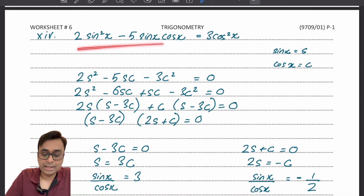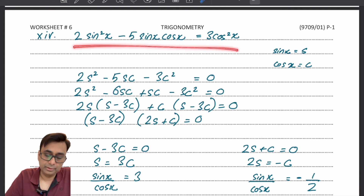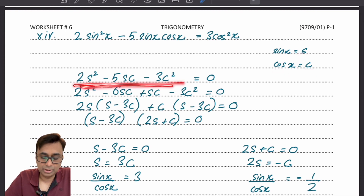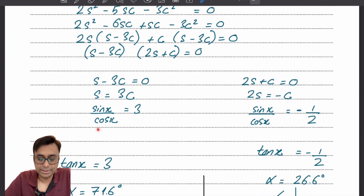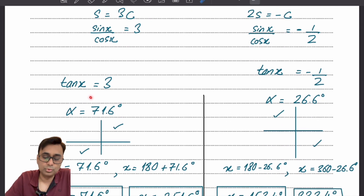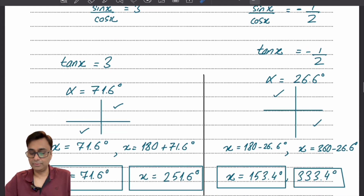For a trickier equation, suppose sin x equals S and cos x equals C to make the quadratic structure clearer. Break the middle term and factorize into two factors. Each factor contains sin x over cos x, which equals tan x. So both factors become equations in tan x. Solve each: one with tan positive (first and third quadrants) and one with tan negative (second and fourth quadrants) to get all values of x.